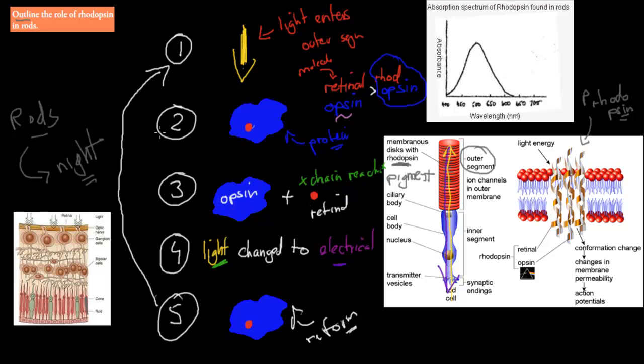For this dot point, I actually think it would be good if you have an idea of these steps, and they're pretty straightforward. Light enters, there's rhodopsin within these membranes, the rhodopsin breaks apart because of light, and when the rhodopsin breaks into opsin and retinal, that's when light changes into electric impulses. Electric impulses then get sent to the brain, and the rhodopsin reforms, and then everything can start again.